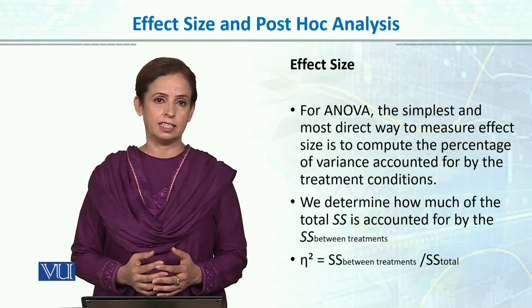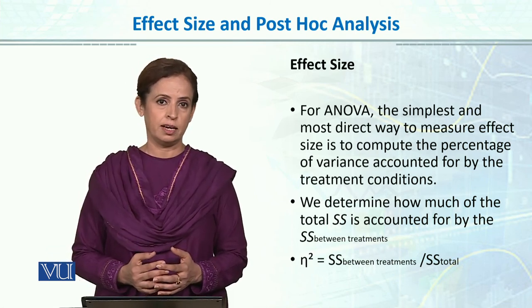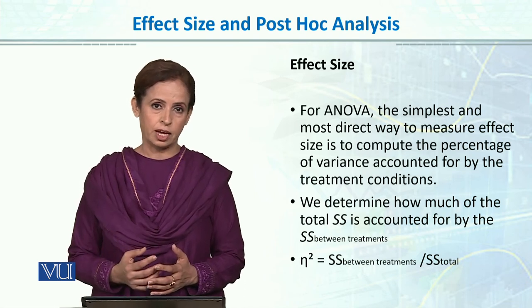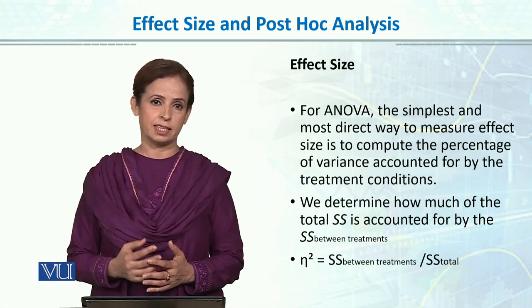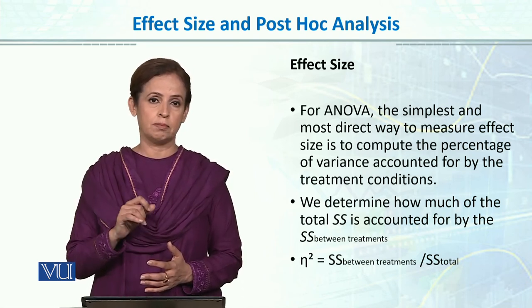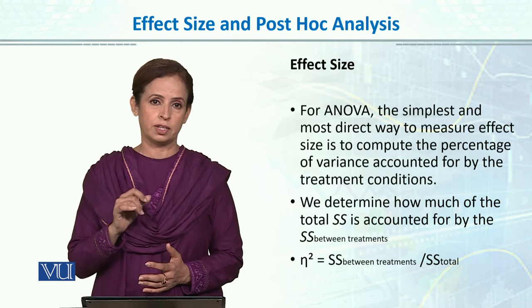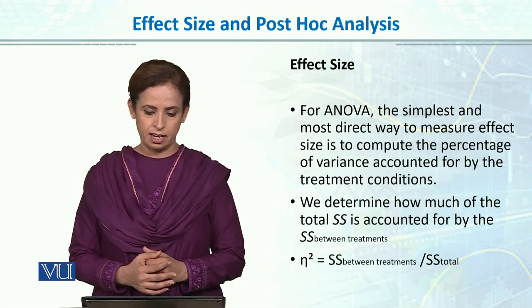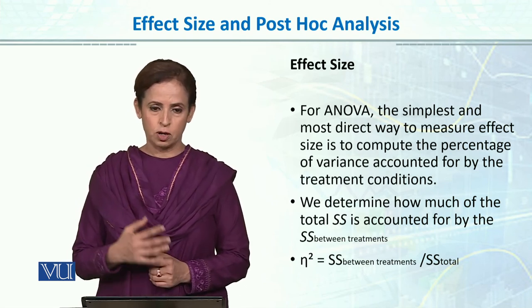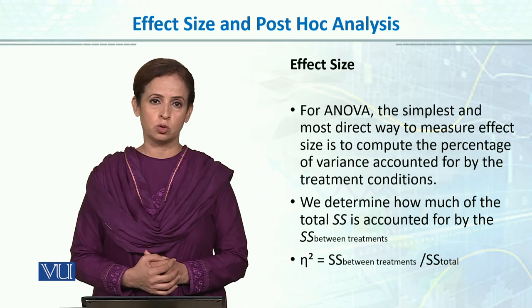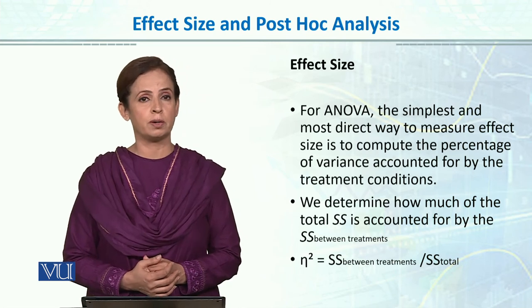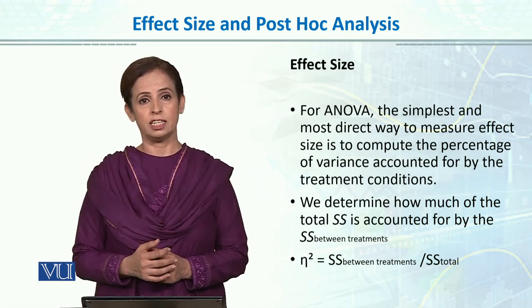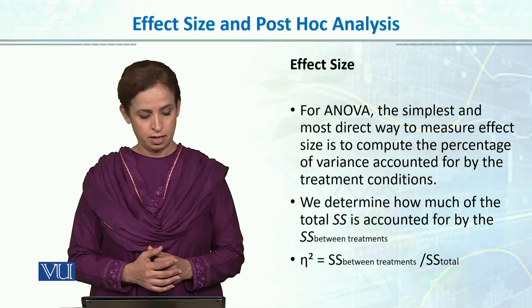For the t-test, we reported the effect size which is the magnitude of the difference between the two groups. Here in ANOVA, because we have more than two groups, we will be calculating partial eta square.